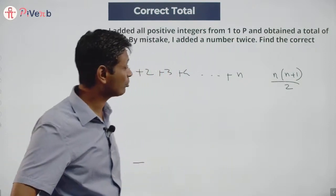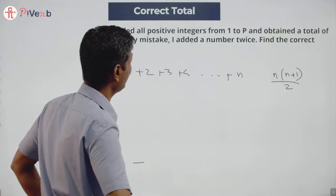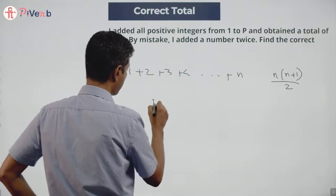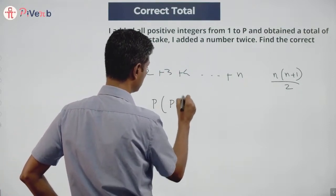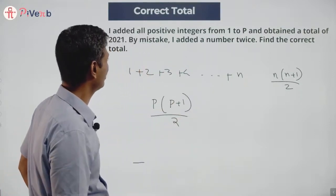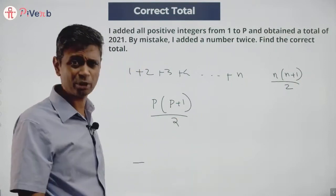n into n plus 1 by 2. So all positive integers from 1 to p: p into p plus 1 by 2. But hey, I've not done just this. By mistake, I've added a number twice.